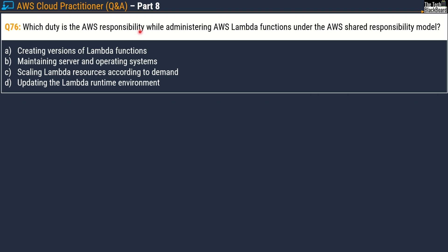It says: which duty is AWS's responsibility while administrating an AWS Lambda function under the AWS shared responsibility model? Options are: A) create versions of Lambda functions, B) maintain server and operating system, C) scaling Lambda resources according to the demand, D) updating the Lambda runtime environment. The correct answer is option B, maintain server and operating system. Please note — this question is asking about AWS responsibility, not user responsibility. Had it asked about user responsibility, the correct answer would have been creating versions of Lambda functions.